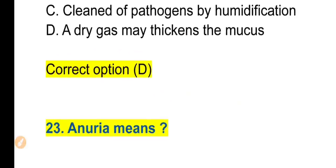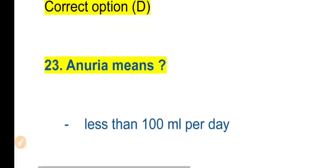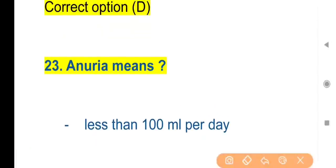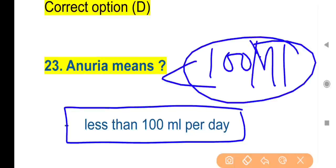Question 23 (without options): What is the exact meaning of anuria? The right answer is less than 100 ml per day. If a person's urine output is less than 100 ml per day, this condition is called anuria.